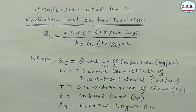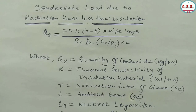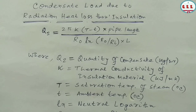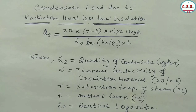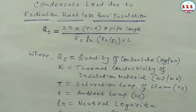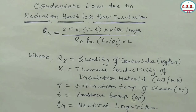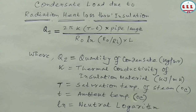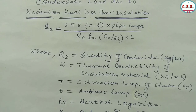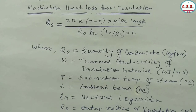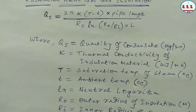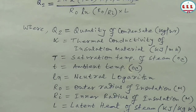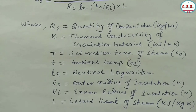Condensate load due to radiation heat loss through insulation under normal running condition: Q2 = (2π × K × (T − t) × pipe length) / (R0 × ln(R0/Ri) × L), where Q2 is quantity of condensate in kg/hr, K is thermal conductivity of insulation material in kJ/(m·K), T is saturation temperature of steam in °C, t is ambient temperature in °C, ln is natural logarithm, R0 is outer radius of insulation in meters, Ri is inner radius of insulation in meters, and L is latent heat of steam in kJ/kg.